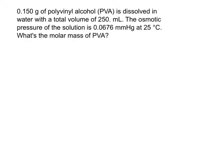Okay, so here's our question from class. We've got 0.15 grams of polyvinyl alcohol in water with a total volume of 250 mls, and we're told the osmotic pressure, and we want to find the molar mass. So we need to start off with the equation here for osmotic pressure, so π equals molar concentration times gas constant times temperature.